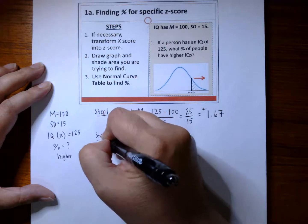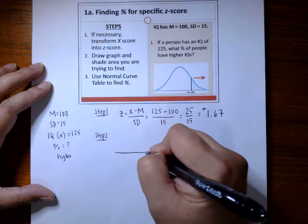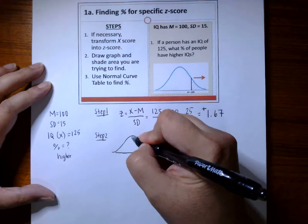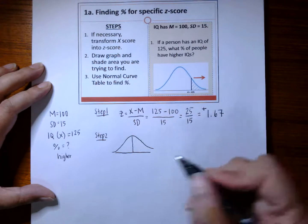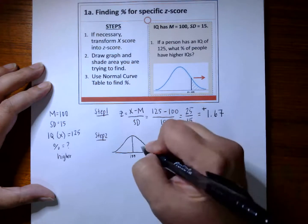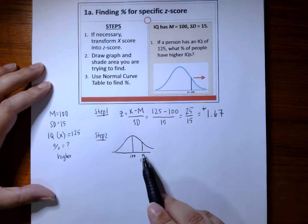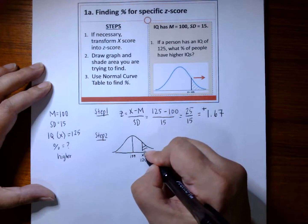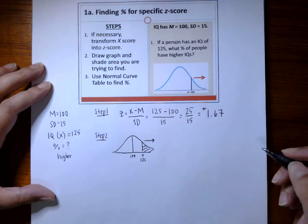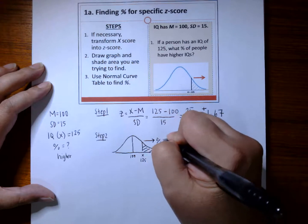Step 2 is to draw the graph and shade the area you're trying to find. We draw a simple normal distribution. Remember that in a normal distribution, the mean is always in the middle — in this case our mean is 100. Our x-score is 125, and we're interested in everything above 125, or this area over here. This area is what we refer to as the percentage in the tail.